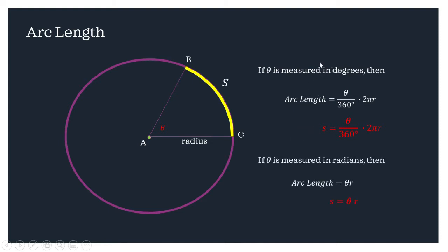So if the given is in degrees, we can have theta divided by 360 degrees times 2 pi R. We use S to denote arc length. If the given theta is in radians, we can have S is equal to theta times R.